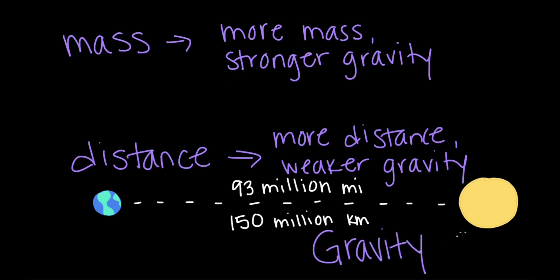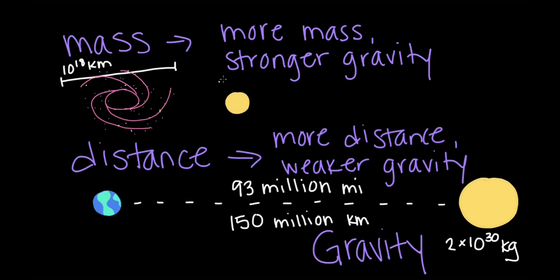The Sun has a mass of about 2 nonillion kilograms, that's 10 to the power of 30. And the Milky Way galaxy, which is about a quintillion kilometers in diameter, has a mass of about 1.5 trillion times that of the Sun.